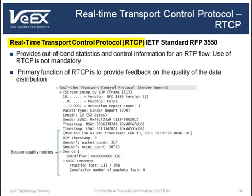The Real-time Transport Control Protocol, or RTCP, is also defined in IETF standard RFC 3550. RTCP provides out-of-band statistics and control information for an RTP flow. Using RTCP is not mandatory. Its primary function is to provide feedback on the quality of the data distribution. The picture here shows the details from a packet capture protocol decode of an RTCP packet.